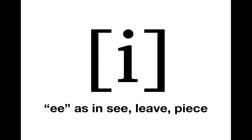Here's our next symbol. Looks like just a regular old lowercase I, but remember it's in brackets and it's not a lowercase I. It's separate because it's an IPA symbol. This symbol represents the sound E as in see, leave, peace.